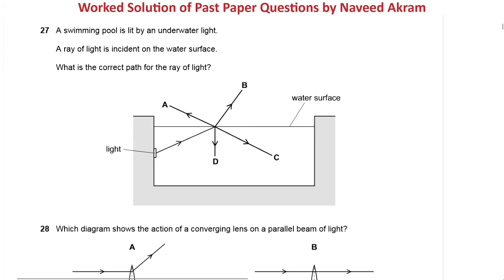The next question is also from May/June 2020 Paper 1 Variant 1, question number 27. A swimming pool is lit by an underwater light. A ray of light is incident on the water surface. What is the correct path for the ray of light? Pause the video, think about it, and try to answer this question.